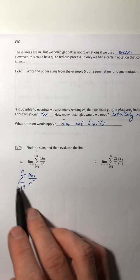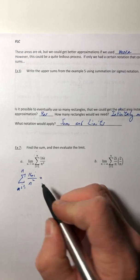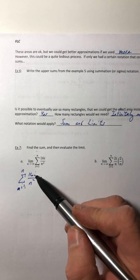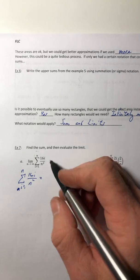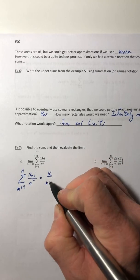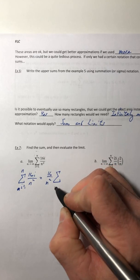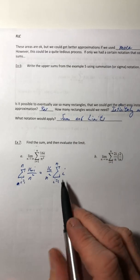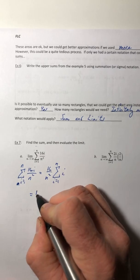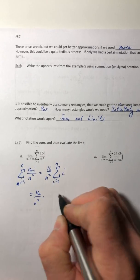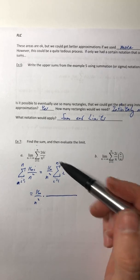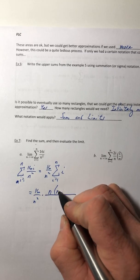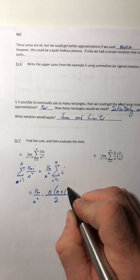This is where your formulas are going to come into play, as well as the properties. So i is the variable. Anything that is not an i, you can factor that out. I'm going to pull off the 16 over n squared, and then I'm left with just the i on the inside. Then I can use my summation formulas. So I'm summing up just i, so that formula was n times n plus 1, all over 2.